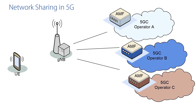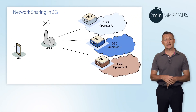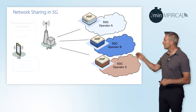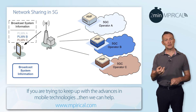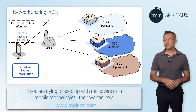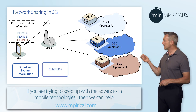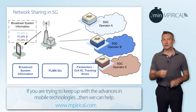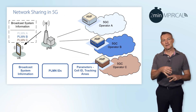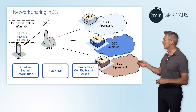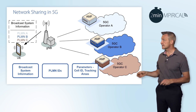In relation to this, here we've got a scenario. We've got multiple operators and we're utilising a shared radio access network. We'll see broadcast system information being transmitted, which will be received by the devices. Contained in there will be PLMN identities and appropriate parameters such as cell identities and also tracking area identities as well.